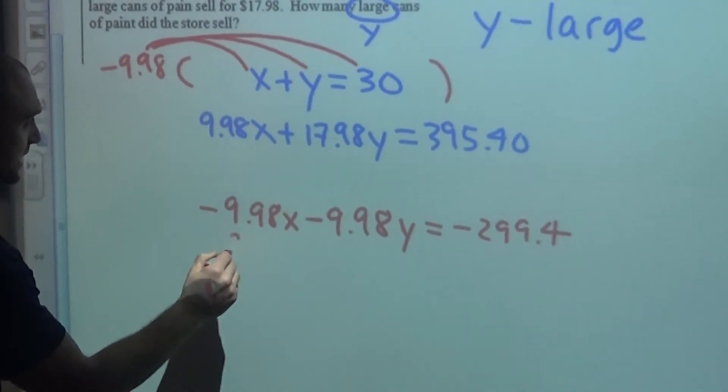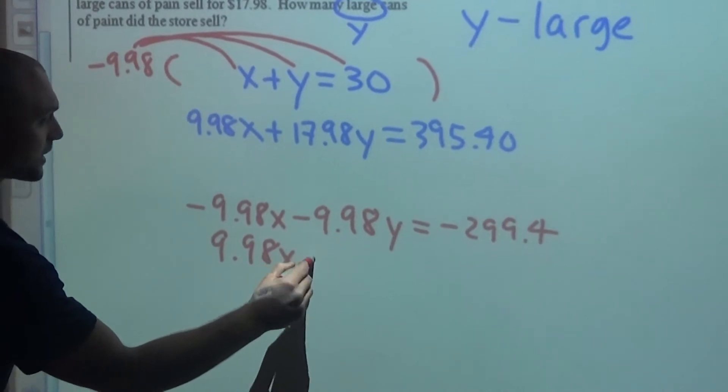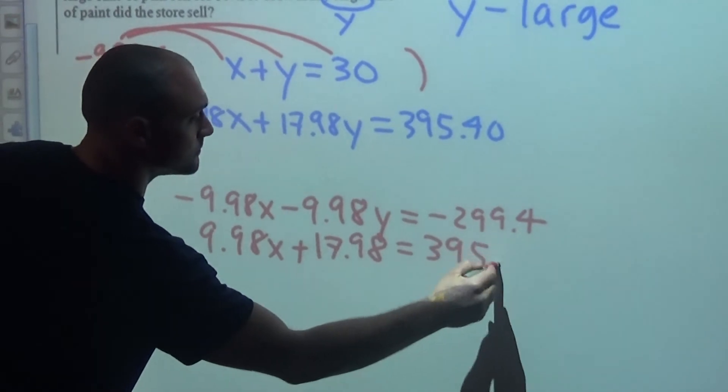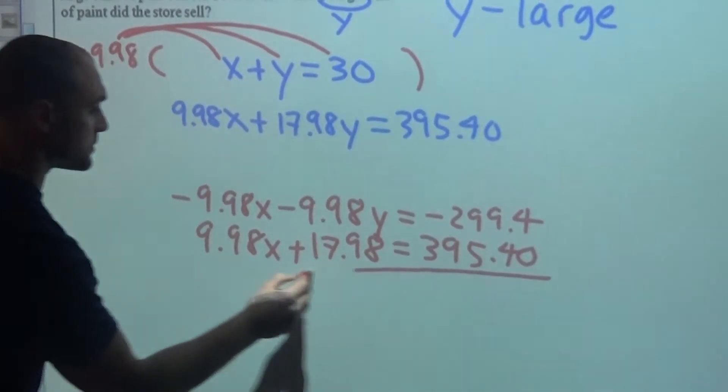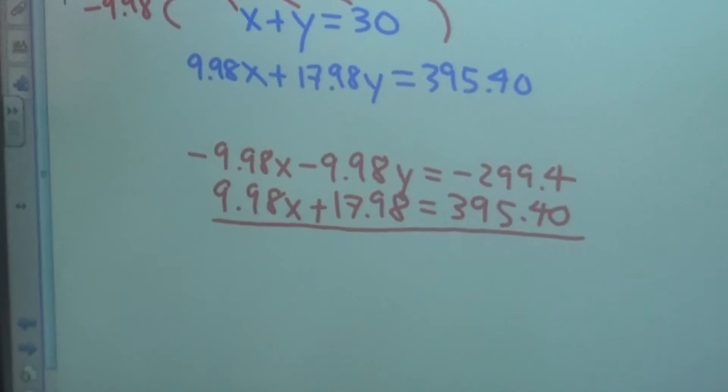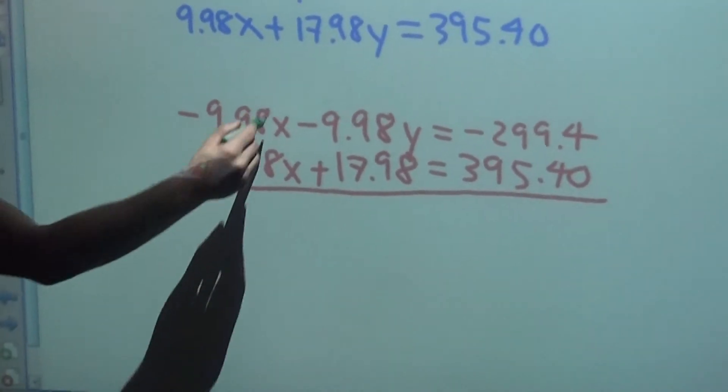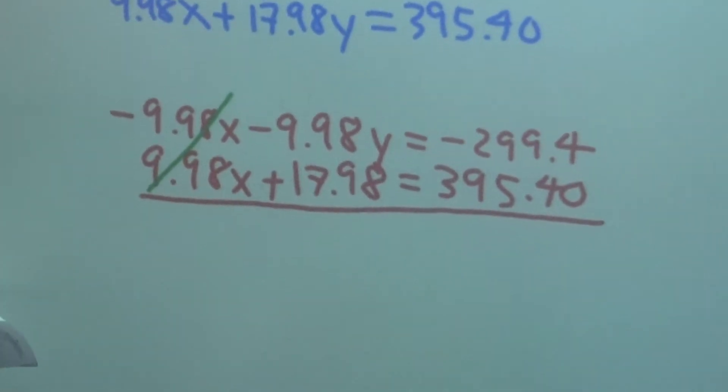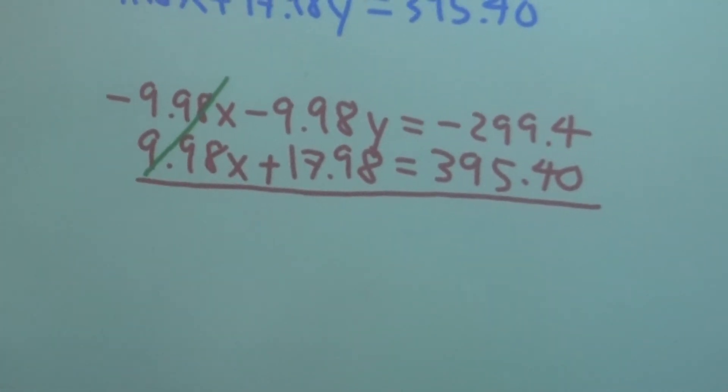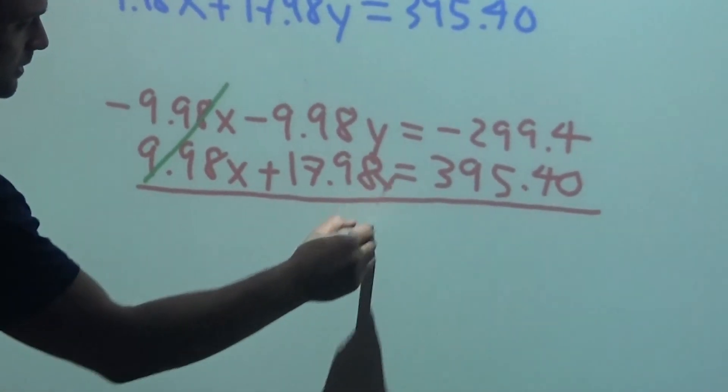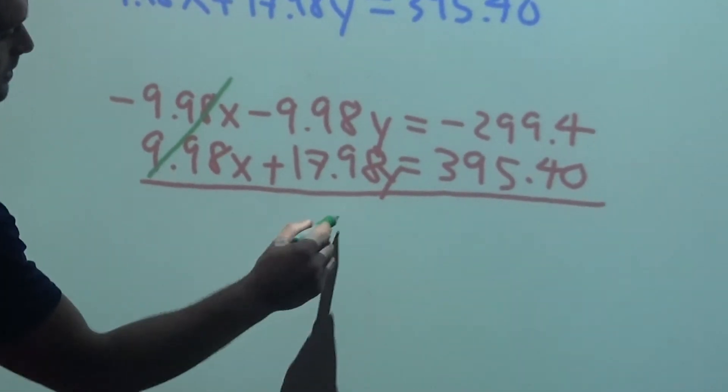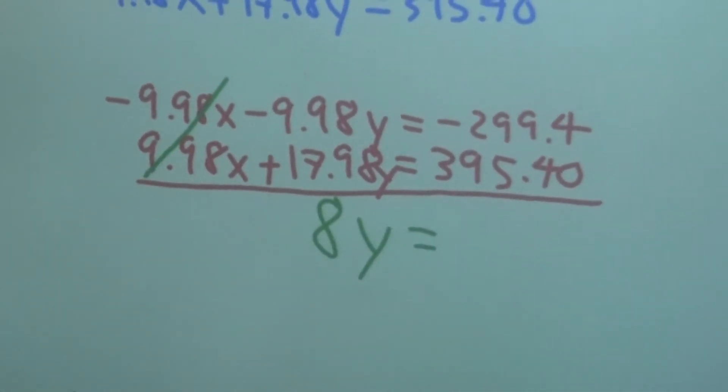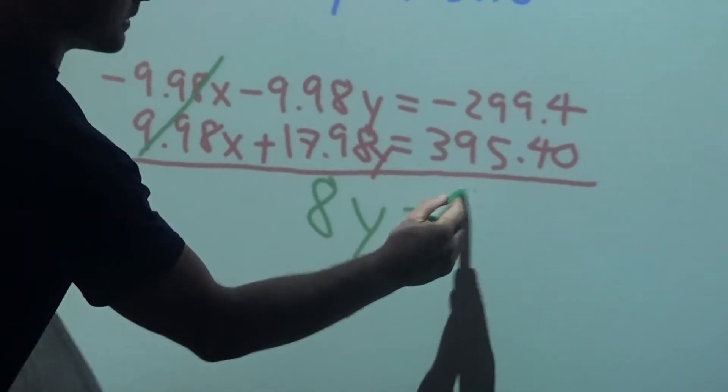And the bottom equation stays the same. So now the whole point of that was creating a situation where I could cancel my x's. Now I have negative $9.98y plus $17.98y. So this gives me $8y. Negative $299.40 plus $395.40 gives me $96.